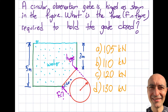First of all, let's look at the figure. What we have is a water tank over here, and what I have is an observation gate. As you can see, this is hinged over here, so it kind of opens like that, right? The question is, as you see, there's a force here — I need to apply some force to hold the gate closed. So I'm asking you: what is that force?